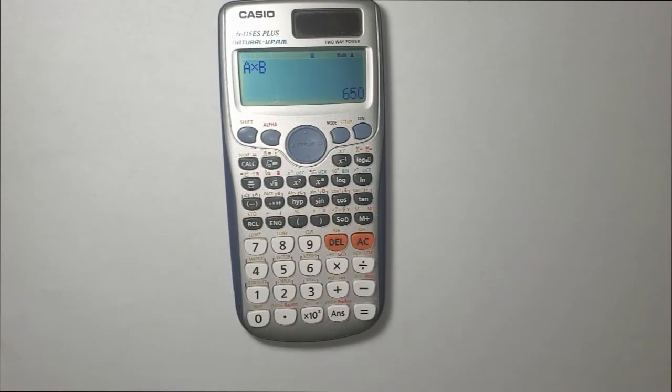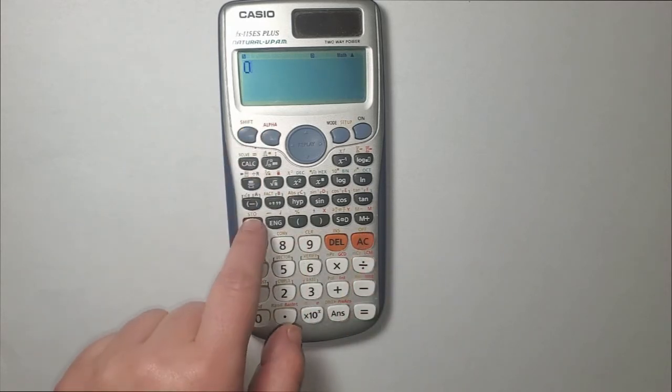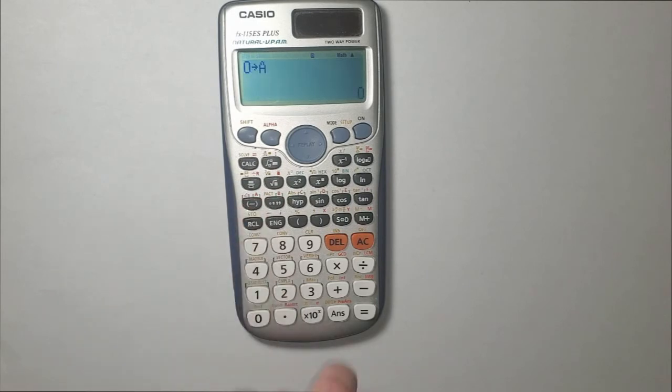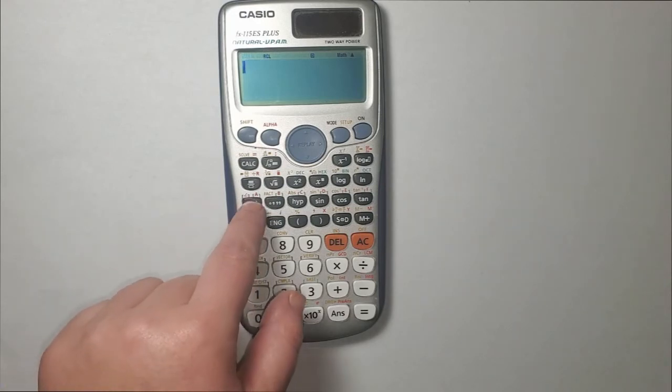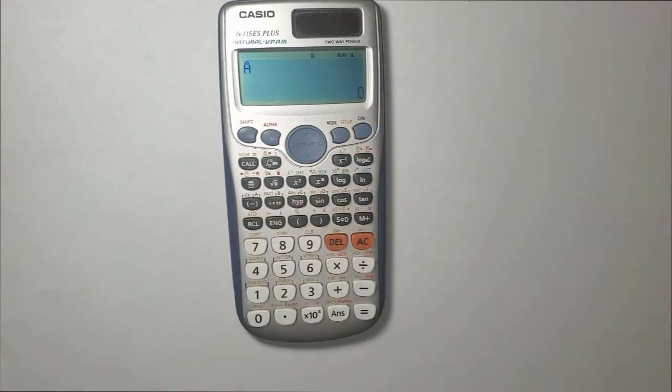Now in order to delete or clear the value of a variable, we go 0 shift RCL and let's say I want to delete the value of variable A. I go A and here it is 0. So if I want to check if it's already cleared, I go RCL A and it is cleared already. This is it for this video. Thank you for watching and take care.